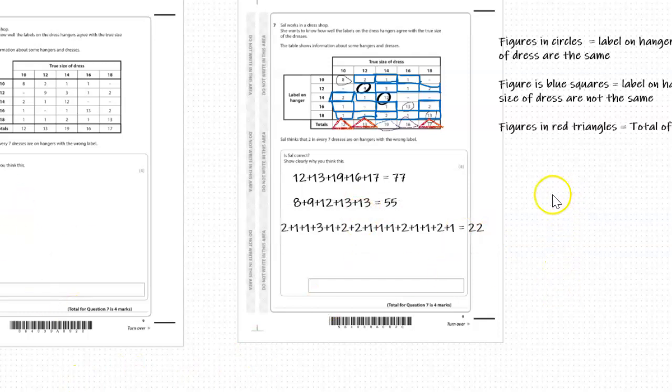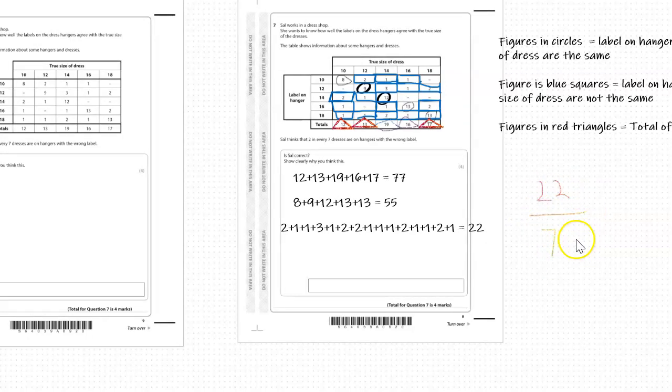Let's use those figures, so 22 out of 77. We've got our figures there, 22 out of 77. It's asking us to compare 2 out of 7.